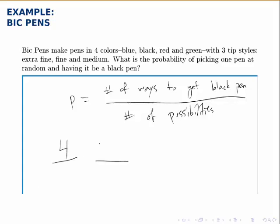There are four options for the color, three options for the tip, so there are 12 total options. That's the denominator—the number of possibilities. There are 12 possible options.